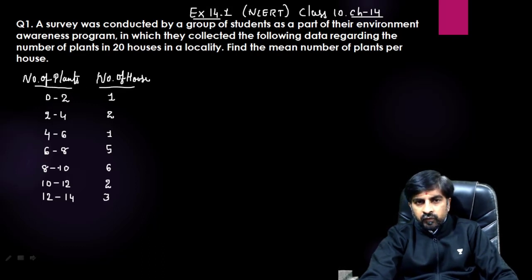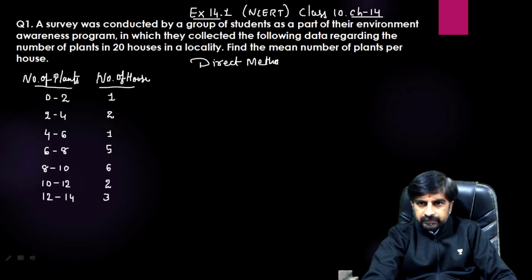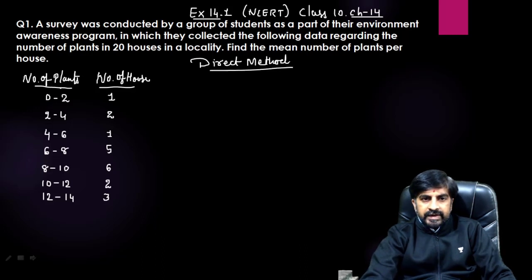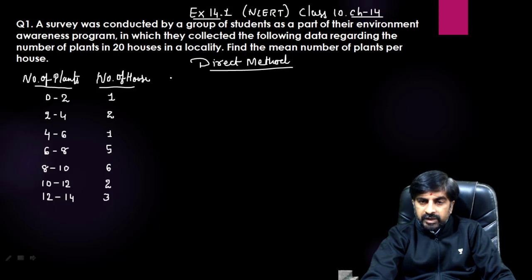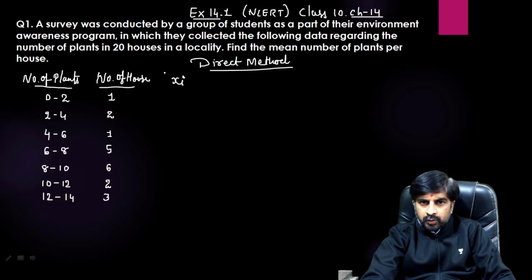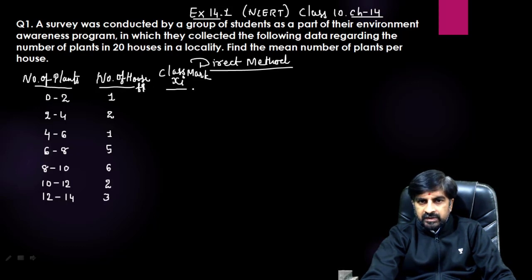Let us start by solving this one. For finding the mean by the direct method, you need to first find out the class mark. Class mark means finding the midpoint of the class interval. We will call that midpoint xi. The frequency — number of houses — will be called fi.